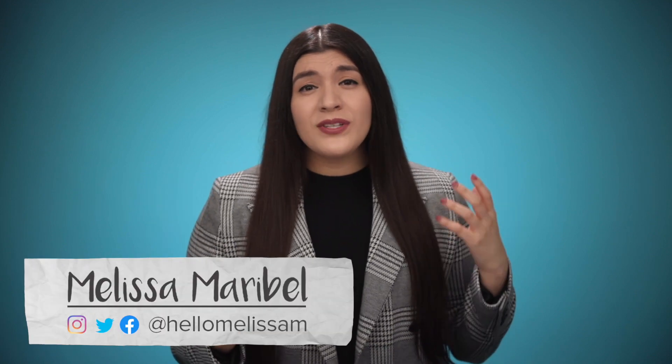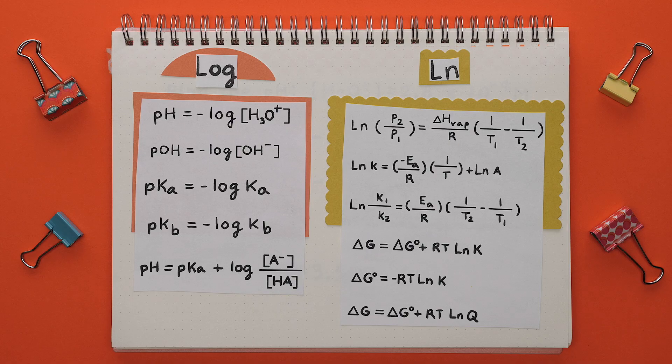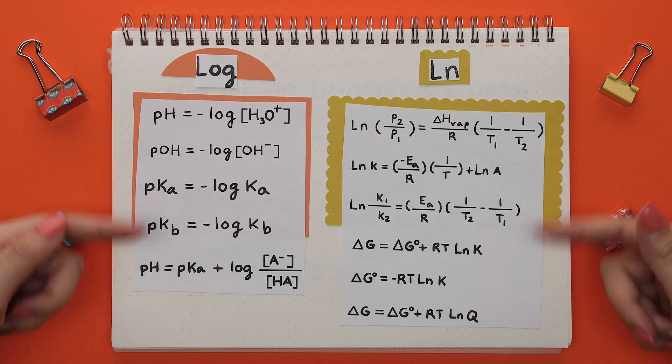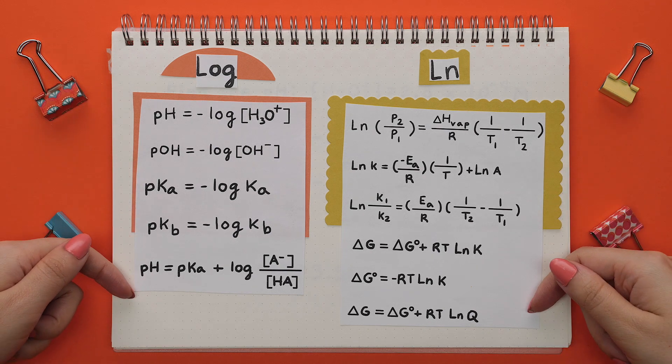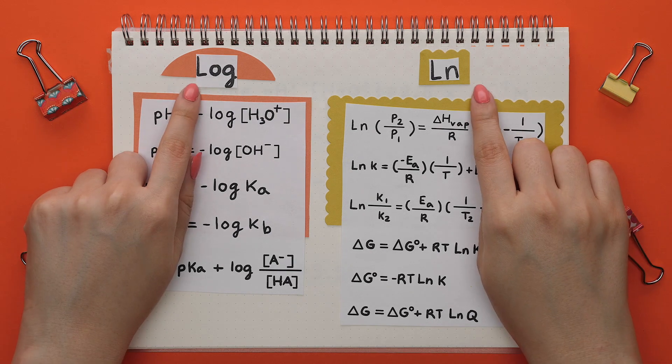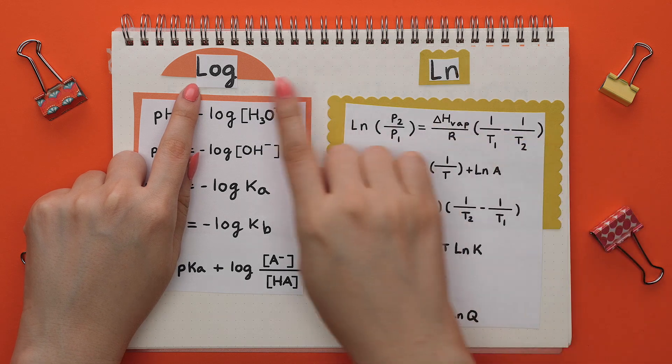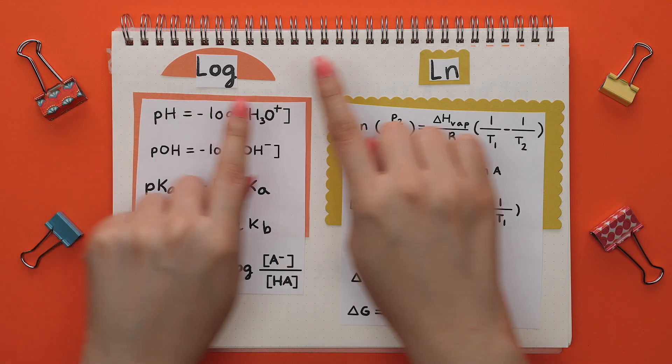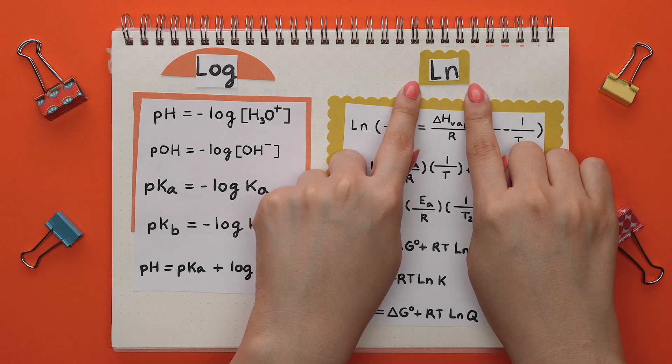In both Chemistry 1 and 2, you will see plenty of logarithms. In fact, they are part of a lot of formulas. So let's review what logarithms and natural logarithms are. Note, we can call logarithms logs for short, and natural logarithms can be referred to as ln.